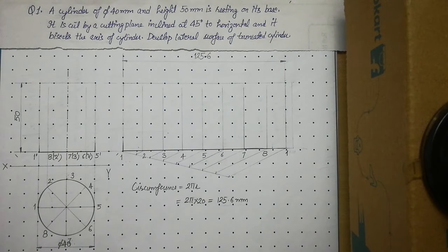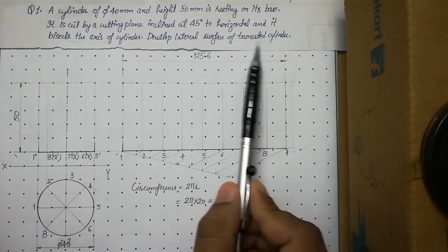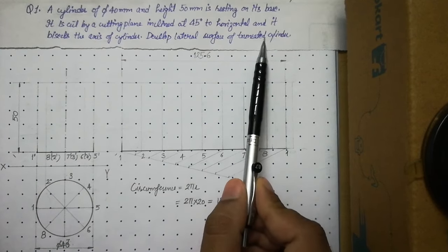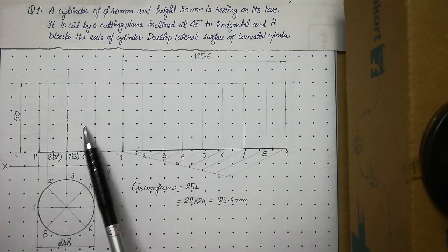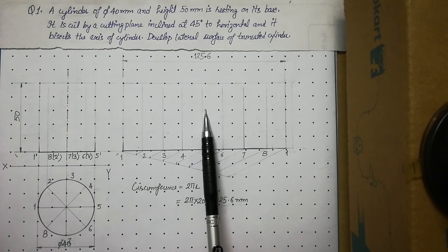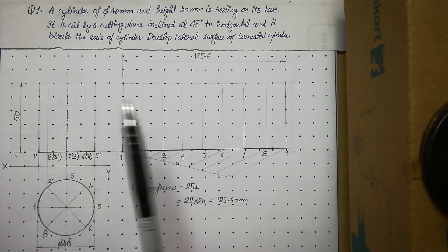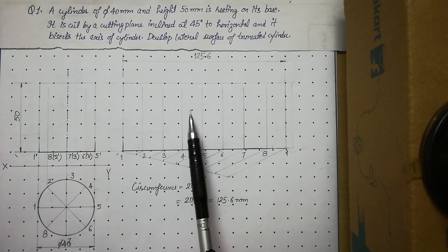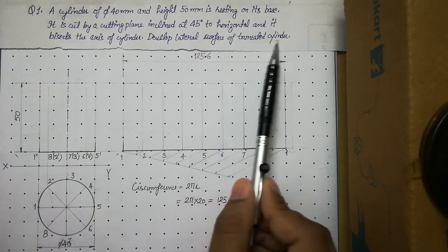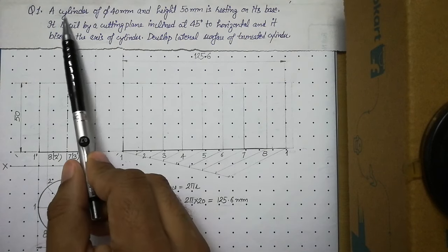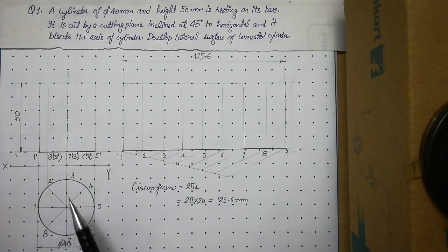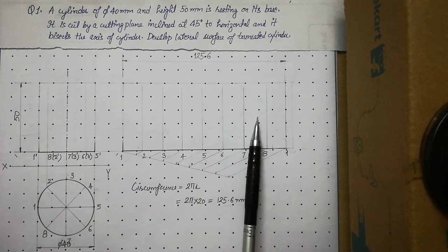In summary: to solve any truncated solid problem, first draw the development of the full solid and keep the front view and development thin. Then convert the front view and development to the truncated version. I hope you have watched the previous video on cylinder development and have no doubts up to this step.